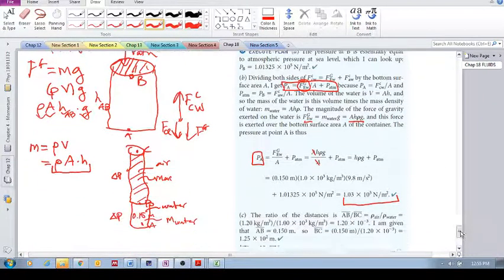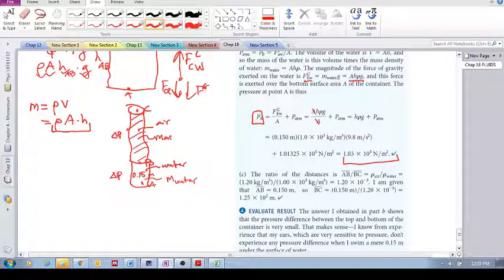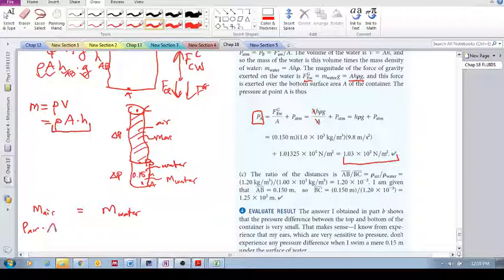So if the mass over here is the same as the mass over there, then we can say that the mass of the air is equal to the mass of the water. Mass of the air is then equal to density of the air times the cross-sectional area of this column of air times the height h from B to C. There's B and there's C.